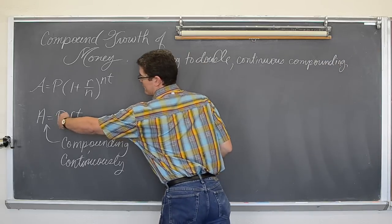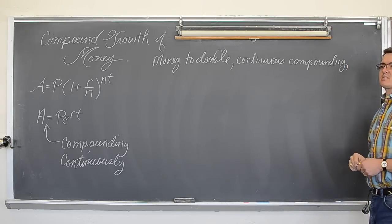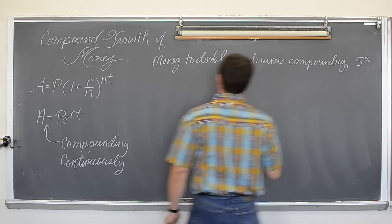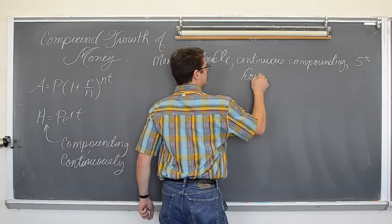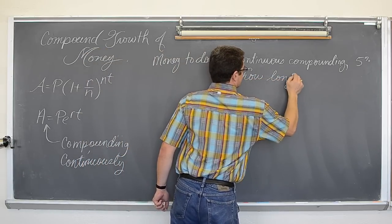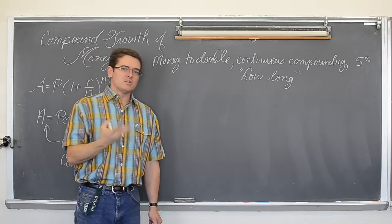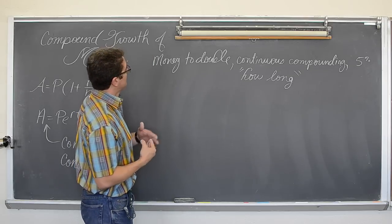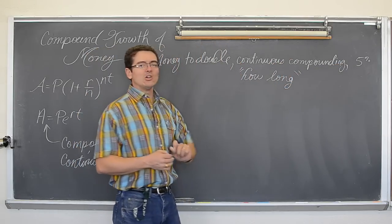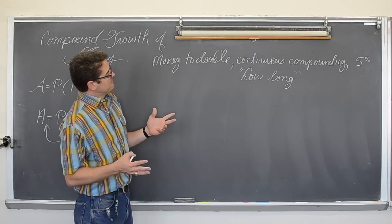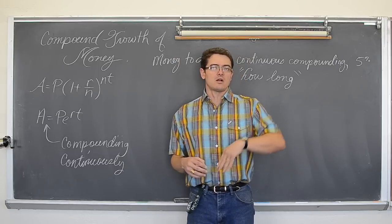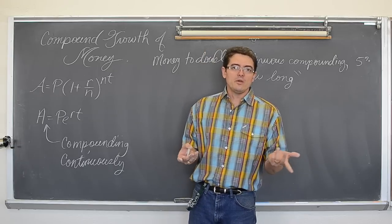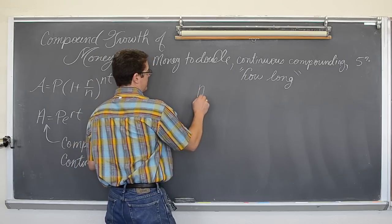Let's say that we want our money to double. And we are going to do continuous compounding. Continuous compounding means we are going to use the PERT formula. We are going to attempt to make 5% of our money, continuous compounding. And the question is how long is that going to take? If you can get continuous compounding, which again is a little bit unrealistic. Most bank accounts and investments are going to do monthly compounding, or the most daily compounding. But at any rate, we want our money to double. Continuous compounding, 5%. How long is that going to take?